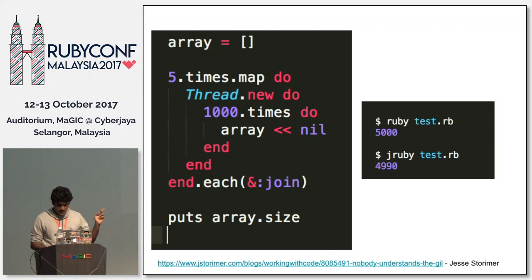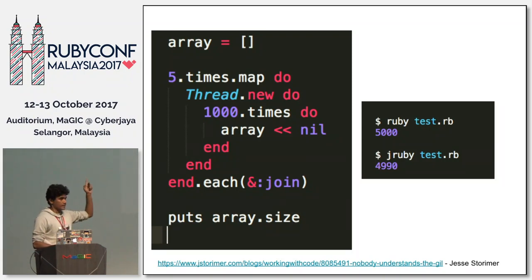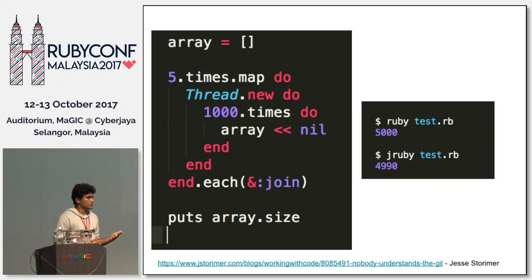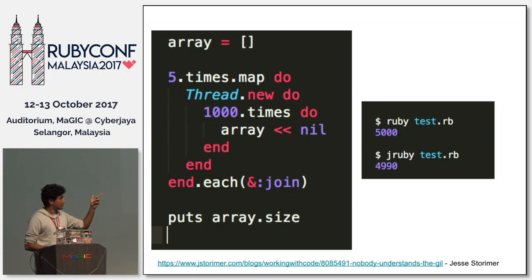This is happening because of parallel processing and the use of shared mutable data — this array — which can be edited by multiple threads simultaneously. Because of that, JRuby with multiple threads can produce incorrect results when pushing to that array.